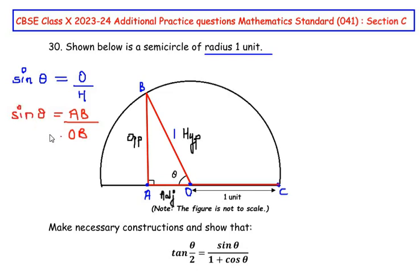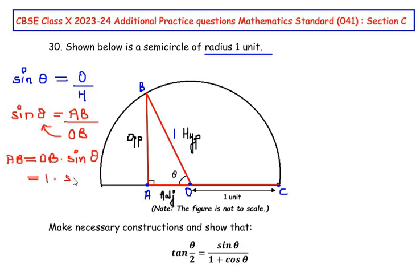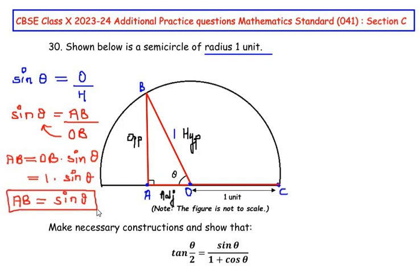Multiplying both sides, we get AB equal to OB times sinθ. Since OB is the radius of the given semicircle, OB equals 1 unit. Substituting 1 in place of OB gives us AB equal to sinθ. We will highlight this result as it is important for solving further.